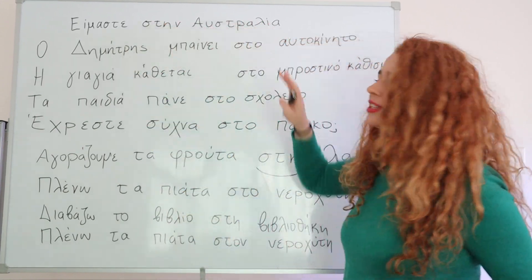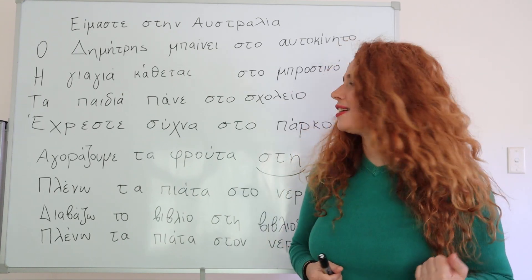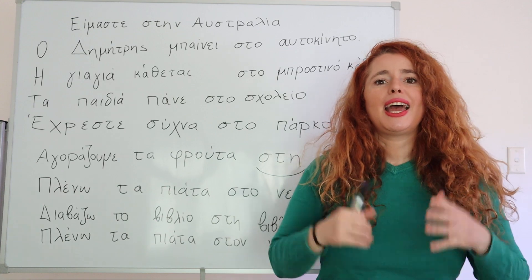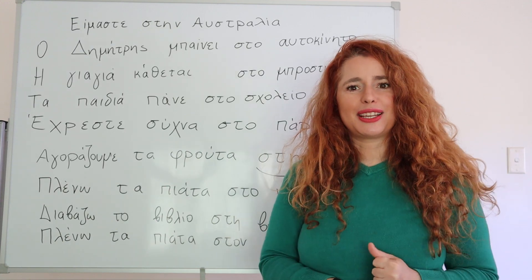Είμαστε στην Αυστραλία. We are in Australia. Είμαστε στην Αυστραλία. Ο Δημήτρης μπαίνει στο αυτοκίνητο. Dimitris gets into the car.